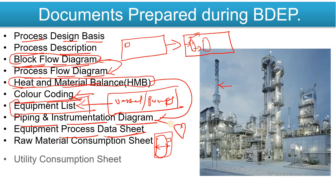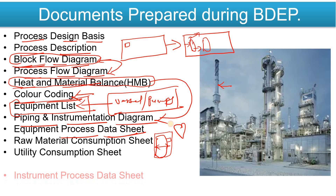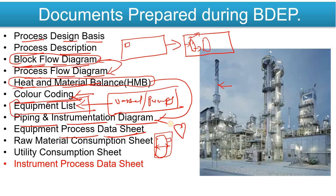We also prepare the Raw Material Consumption Sheet and Utility Consumption Sheet. After completion of the P&ID, you can prepare the Instrument Process Data Sheet — you will prepare the process data sheet for control valves, level transmitters, pressure transmitters, PRVs, TSVs, PSVs, and AFRs. All instrument details are covered in the Instrument Process Data Sheet.